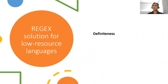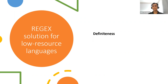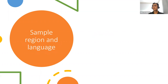Regex solution for low resource languages. The languages that I'm working on are low resource in the sense that there is a very low number of corpora, and the majority of them are endangered or in the process of transition, basically changing by losing different patterns. My topic today will be focusing on definiteness.